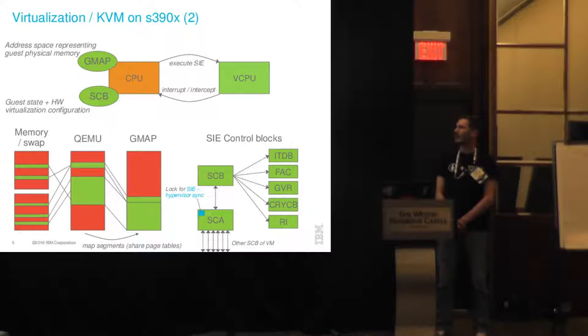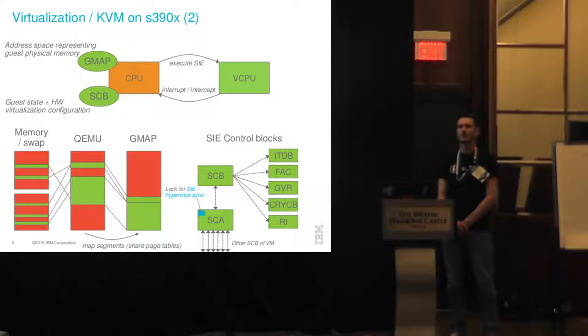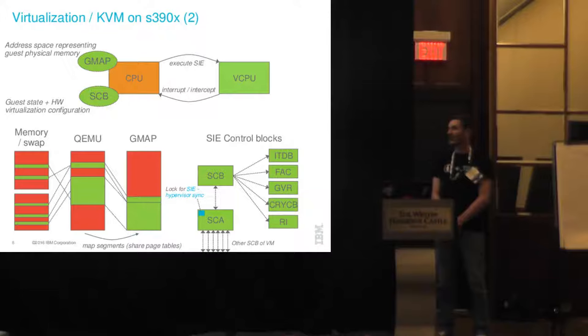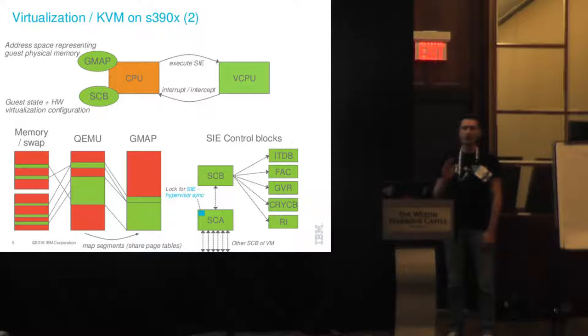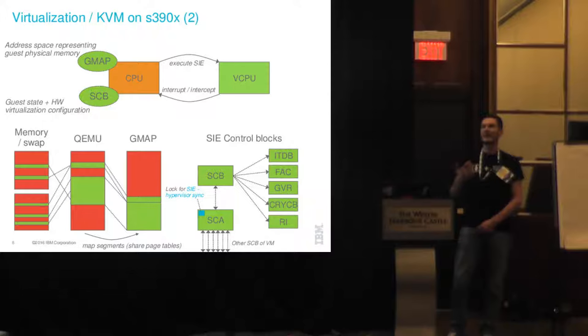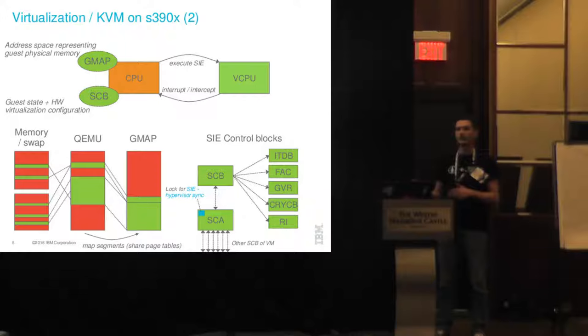The SIE control block describes the state of the virtual CPU and contains execution controls — mechanisms to control how hardware virtualization is done. In addition, this control block references satellite control blocks containing additional registers, further control blocks, and a so-called System Control Area. The System Control Area contains a log that can be used to coordinate certain changes done to address spaces between the hypervisor and the hardware virtualization — and that becomes important later on.